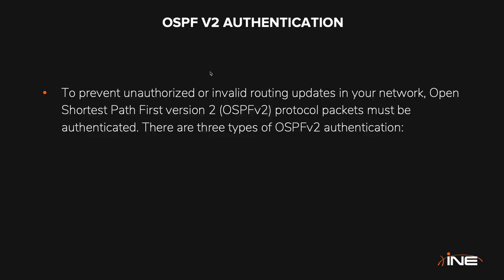Why do we need authentication? Control plane authentication is used to prevent unauthorized or invalid routing updates in your network. OSPF, EIGRP, RIP, and BGP all support authentication to protect the control plane.